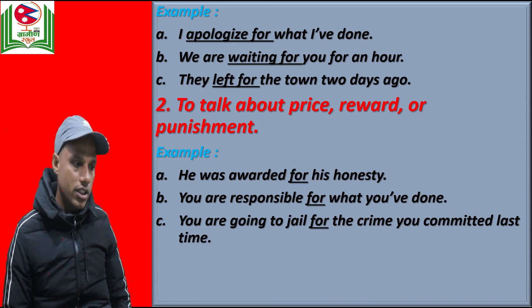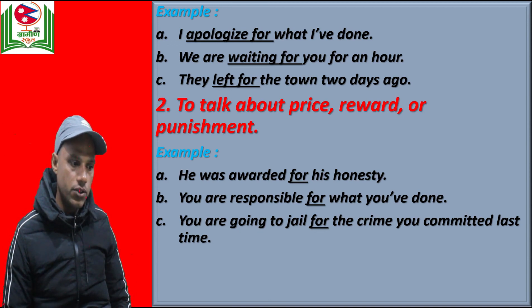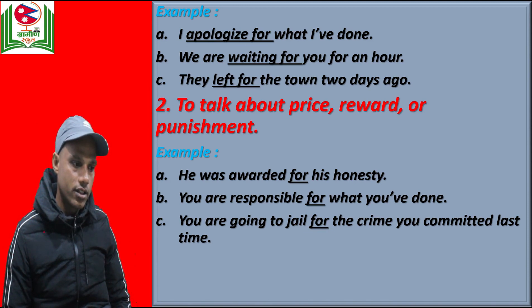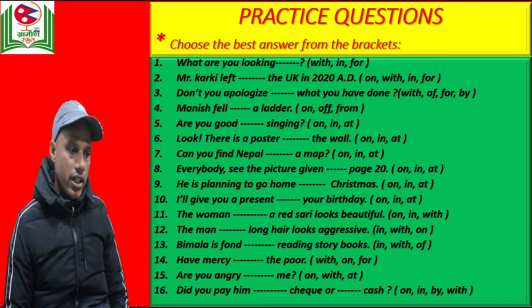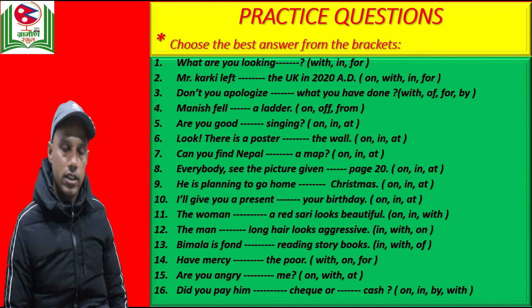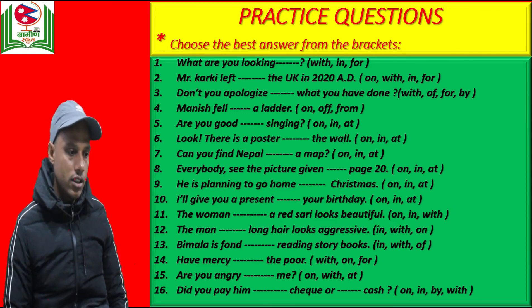The next condition is to talk about prize, reward, or punishment — we also use preposition 'for'. For example: he was awarded for his honesty. You are responsible for what you have done. You are going to jail for the crime you have committed. This is all about the use of preposition 'for'. I have some questions regarding the use of prepositions — you can practice on your own, and if you have any confusions, you can contact or consult us. Thank you very much.